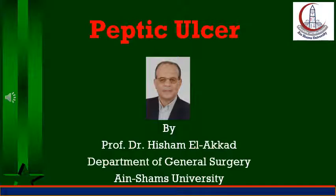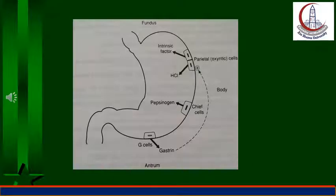Peptic ulcer could be acute or chronic, gastric or duodenal, but can occur less commonly elsewhere. The body secretes HCl, pepsinogen, mucus, and intrinsic factor. The antrum secretes mucus and the hormone gastrin.